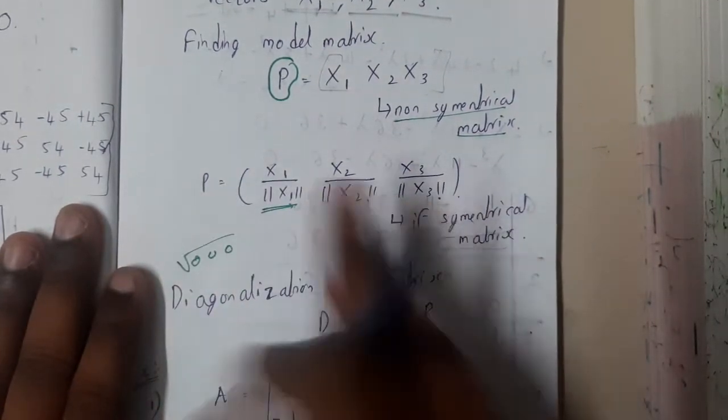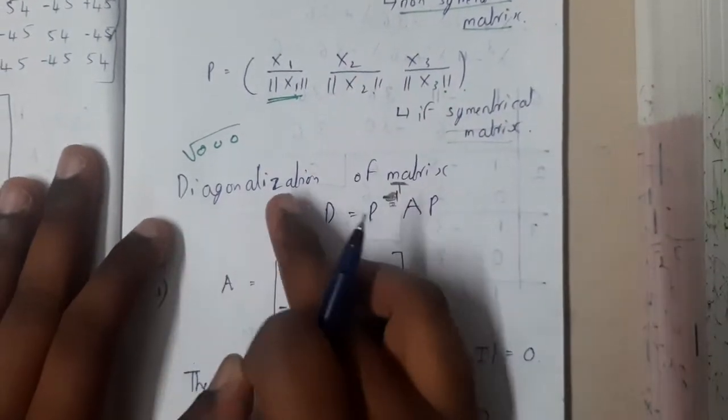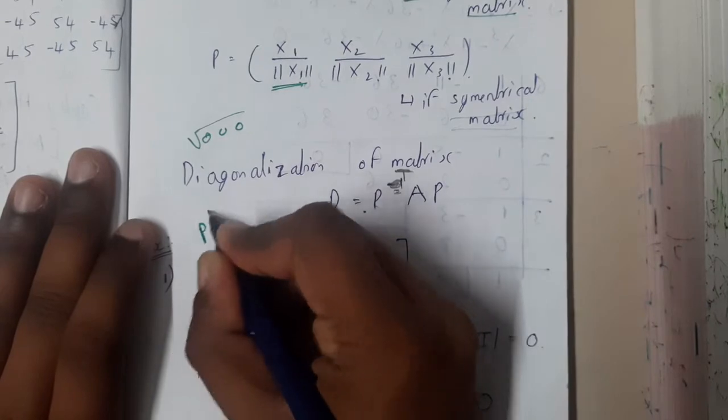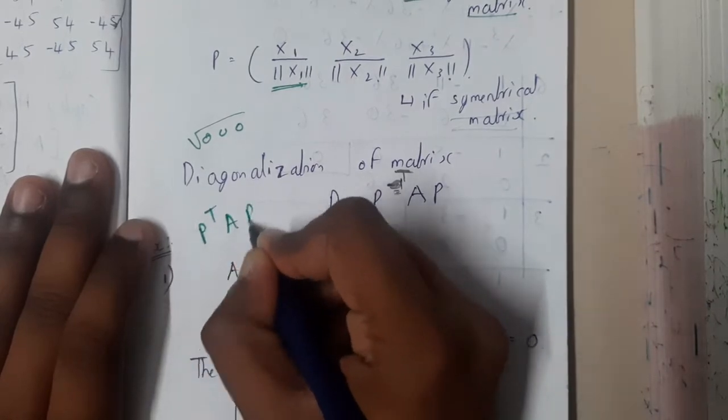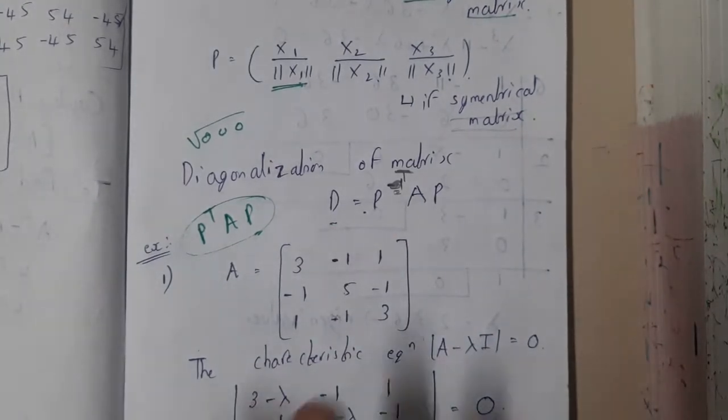Once you are going through the example you will have it clear, don't worry. Once this P identification is done, then you will be diagonalizing the matrix. Diagonalization is nothing but P transpose into A into P. You will be getting the result, so that is the diagonalized matrix.